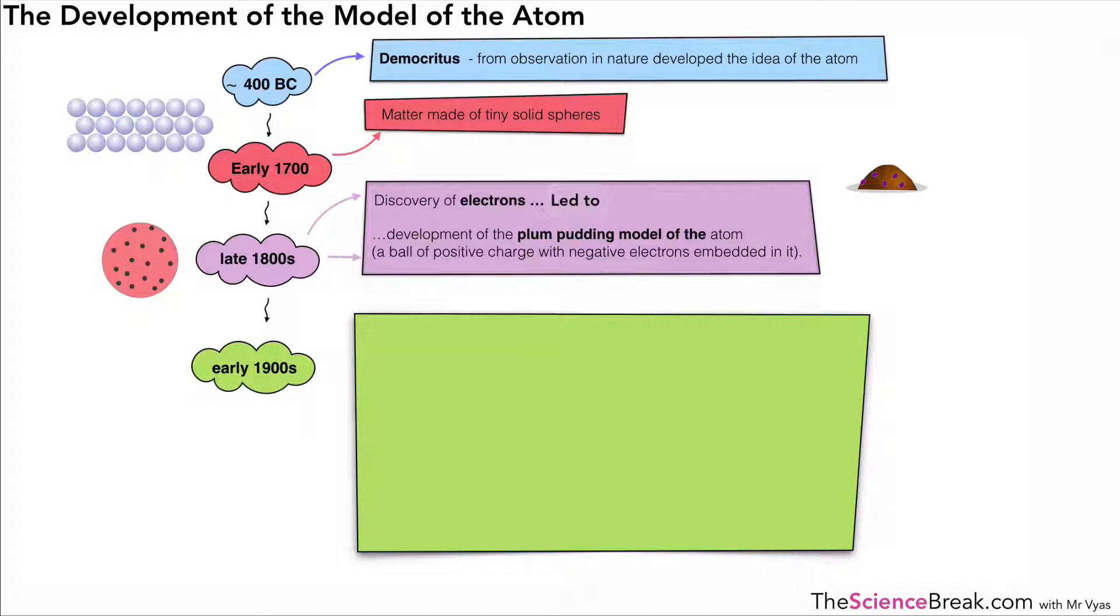Moving on to the early 1900s, a very important experiment was done by two scientists called Rutherford and Marsden, and they did what's called the alpha particle scattering experiment. We're going to look at that in more detail in a moment.